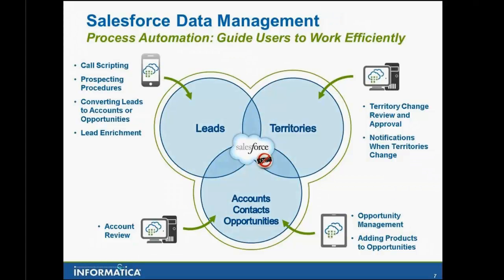The last step from a customer perspective was around process automation. This customer has a complex environment with a lot of data now in the Salesforce system. They've focused on integration, they've focused on data quality, but now they need to make it easy for their users to work with the data and prevent them from corrupting all the hard work that's gone into the first couple of steps. When sales reps create an opportunity, they simply press a button and walk through the steps in a guided path, screen by screen, instead of populating various fields in a long form. When the sales manager needed to make a territory change, the manager followed a guide that quickly made the update and issued notifications, sent emails, and assigned follow-on tasks automatically — huge efficiency gains, major time-saving, and productivity benefits for end users.